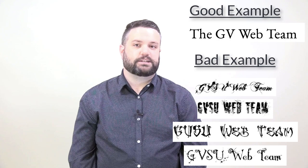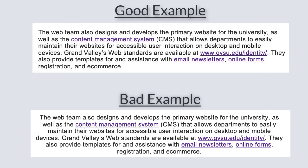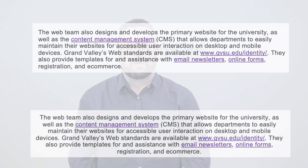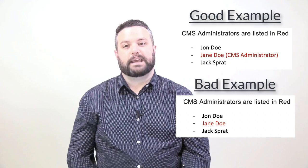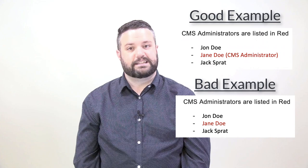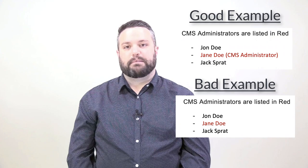Text justification — if the text is configured as justified, it creates spaces between words. These spaces make it harder to read, especially for those users with a visual impairment. You will want to make sure that, in most cases, the text is justified to the left. Another thing you will want to avoid is using color to convey information. In this example, we have a list of people. The text says CMS administrators are listed in red. For a person who is visually impaired, they will not be able to tell which person the text is referring to.